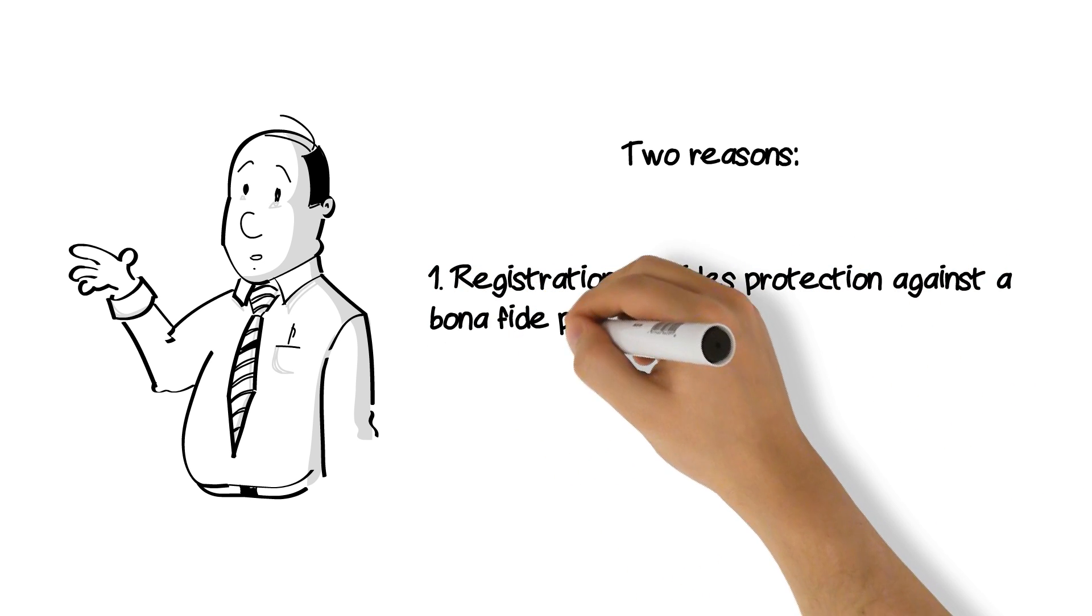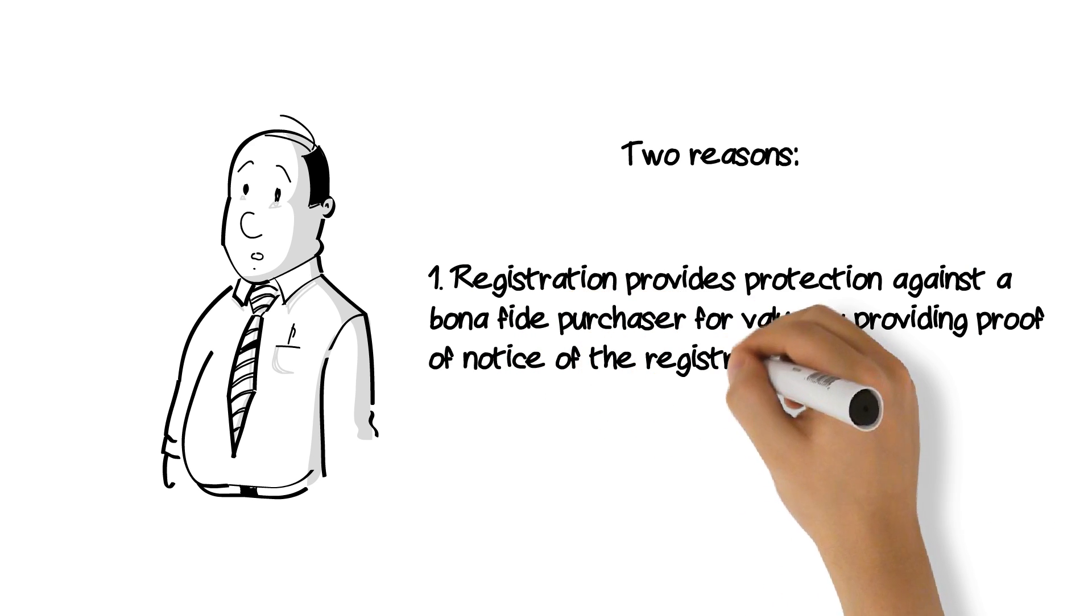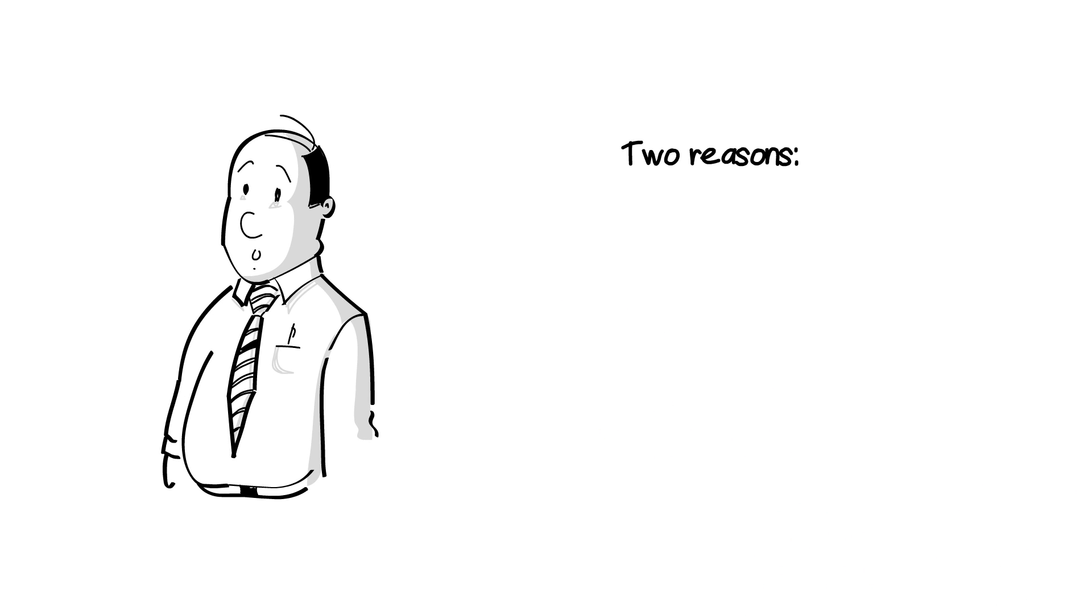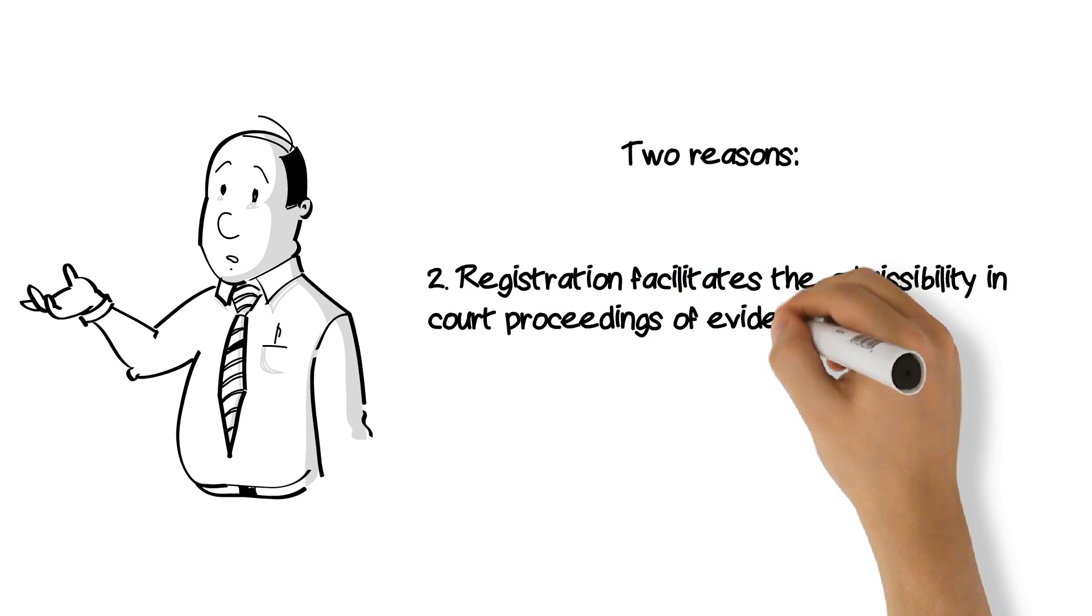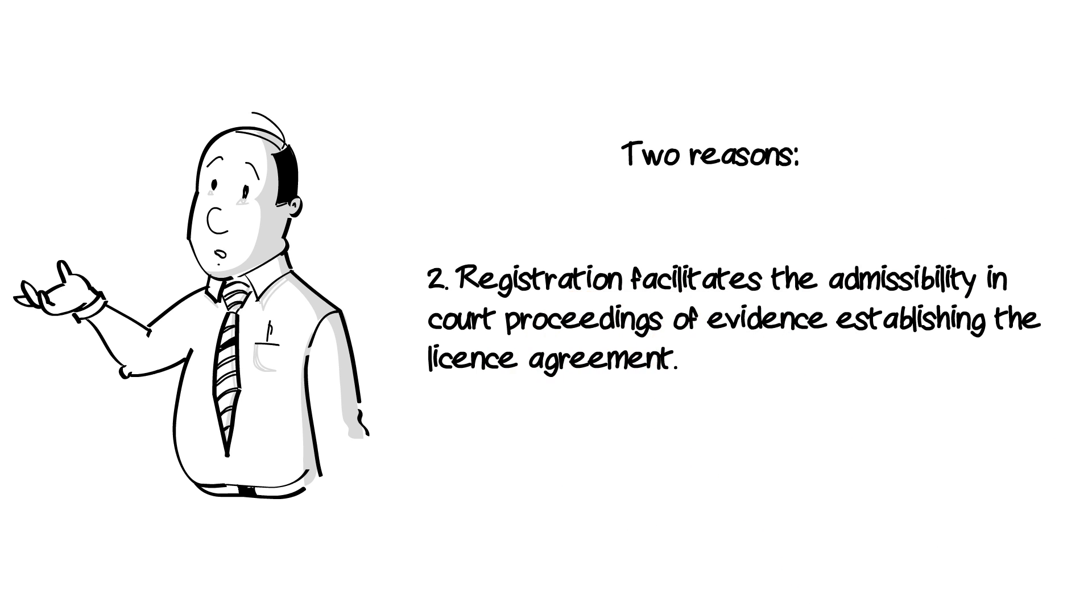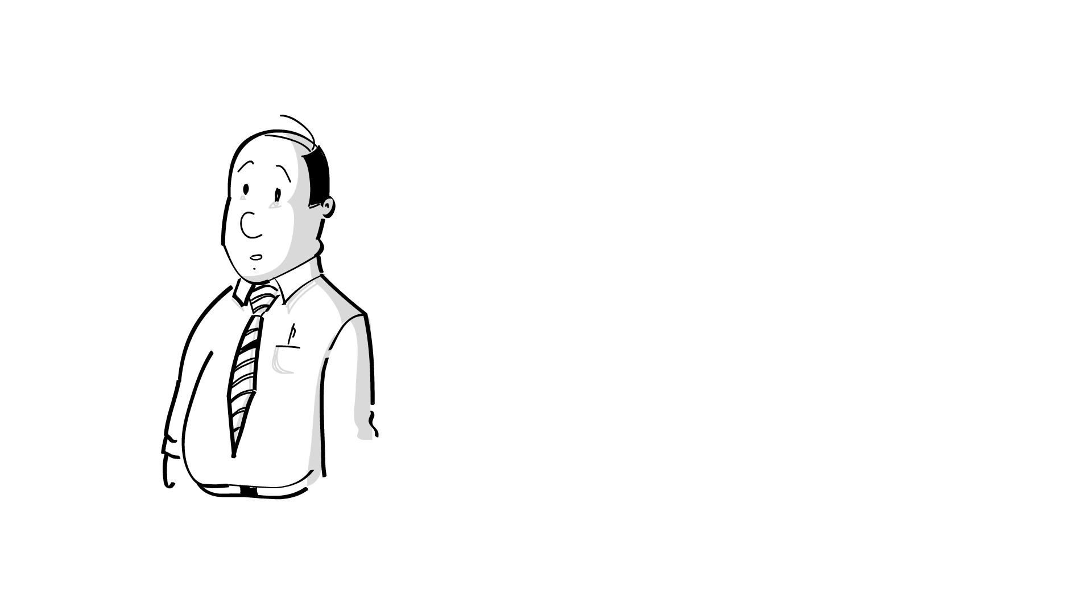Registration provides protection against a bona fide purchaser for value by providing proof of notice of the registrant's interest. And registration facilitates the admissibility in court proceedings of evidence establishing the license agreement. You can see these in sections 195 and 196.